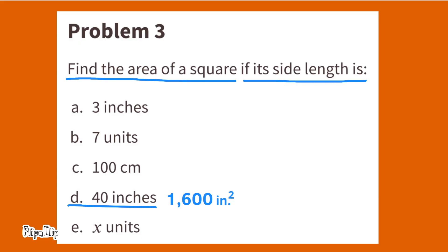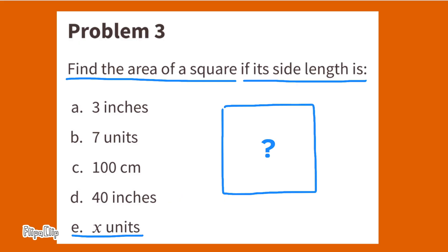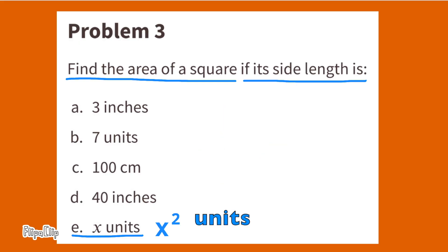Find the area of a square if its side length is X units. X times X equals X squared. The area of this square would be X square units, or X units squared.